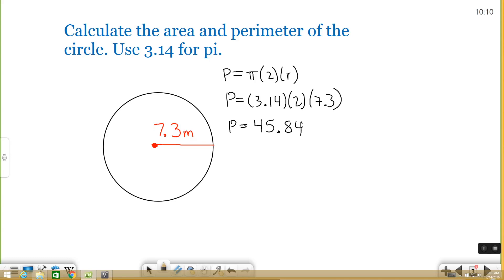So let's look at the area. Area is a different formula. It's pi times r squared, which is different than r times 2. So again, plug in what you know and simplify it. 3.14 is pi, 7.3 squared.